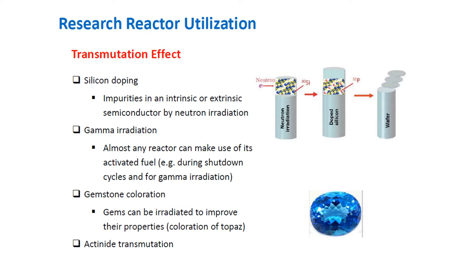Gemstones may be irradiated with either neutrons or high-energy gamma rays of the order of several tens of MeV produced by electron beams, to improve their properties — for example, changing to a more desirable color to increase their appeal and monetary value. One significant commercial neutron irradiation activity currently performed at research reactors is the coloration of topaz. However, the legality of this activity must be verified with national authorities, as several states have banned the practice. There is potential for significant income through gemstone irradiation, though commercial sensitivity limits disclosure of specific process details.